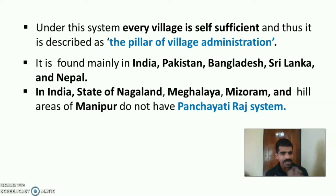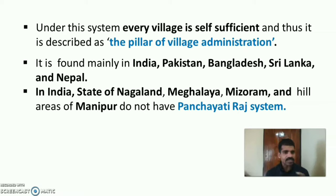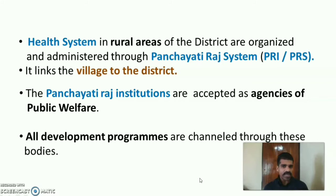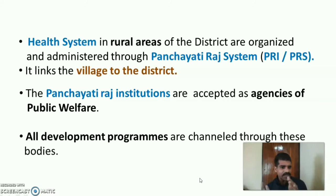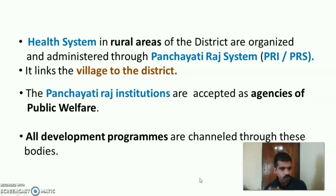Panjayati Raj system is mainly found in India, Pakistan, Bangladesh, Sri Lanka and Nepal. Even within India, some states such as Nagaland, Meghalaya, Mizoram and the hilly areas of Manipur do not follow the Panjayati Raj system. The health system in the rural areas of the district is organized and administered through the Panjayati Raj system (PRI or PRS). Panjayati Raj links the village to the district and is an accepted agency of public welfare to provide public health services. All development programs in the village are channeled through these bodies.